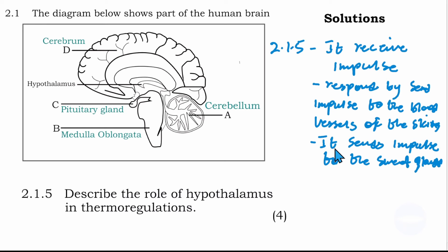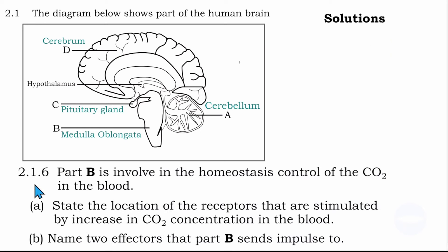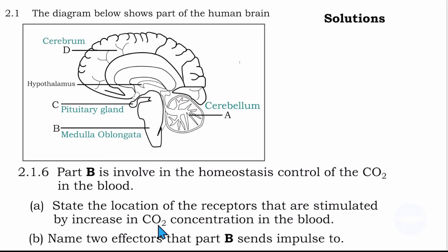The next question, 2.1.6: part B is involved in homeostatic control of carbon dioxide in the blood. Part B is the medulla oblongata. The question says: state the location of the receptors stimulated by an increase in carbon dioxide concentration in the blood. If the level of carbon dioxide increases in the blood, the receptors are located in the carotid artery. The carotid artery is the blood vessel that supplies the brain with oxygenated blood — that is where we find the receptors responsible for detecting carbon dioxide.